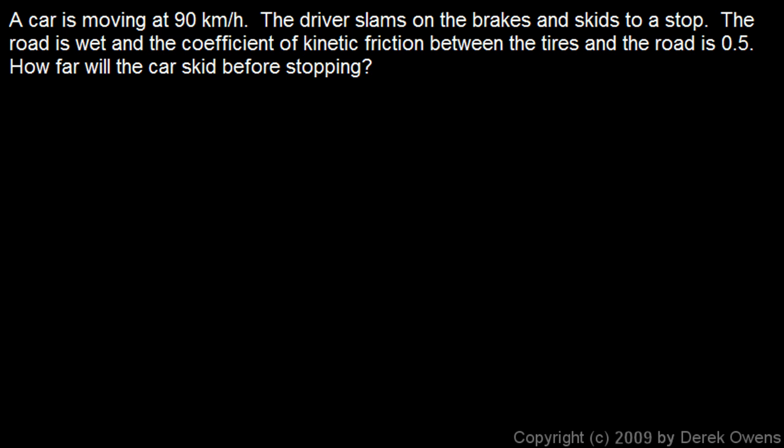Okay, now let's look at the next problem. This problem is almost identical. The car is moving at 90 kilometers per hour. And the driver slams on the brakes and skids to a stop. But this time the road is wet. And the coefficient of kinetic friction between the tires and the road is 0.5. So, we'll see when we solve this, we'll see the difference between braking on a dry road and on a wet road. So, again, let's take the initial velocity. I'm going to do this kind of fast now. 90 kilometers per hour. The same numbers here. If we just multiply by 1,000 meters per kilometer and 1 hour per 3,600 seconds, we end up with 25 meters per second as before.